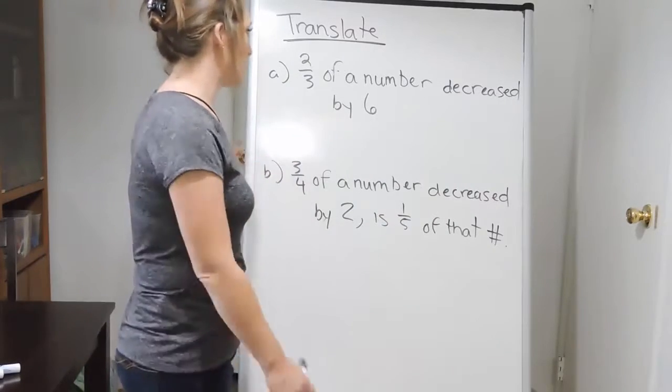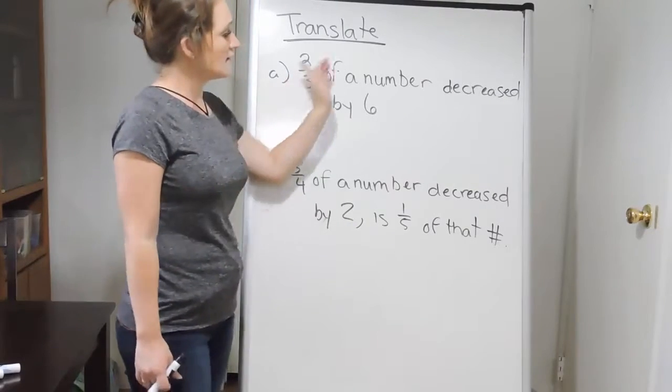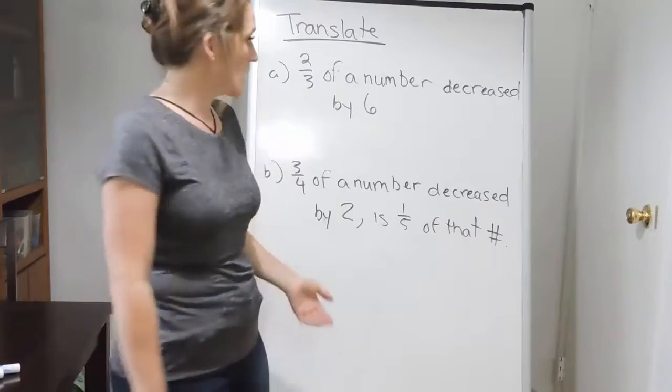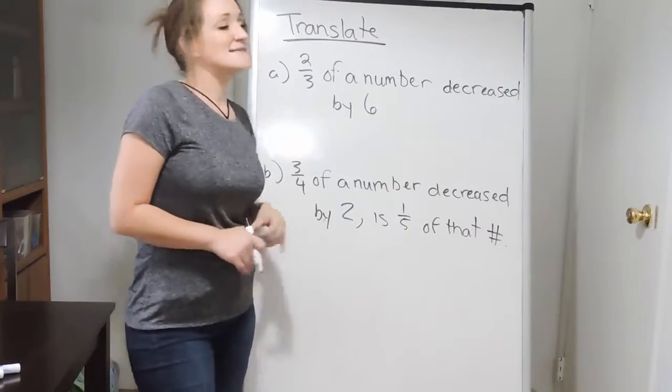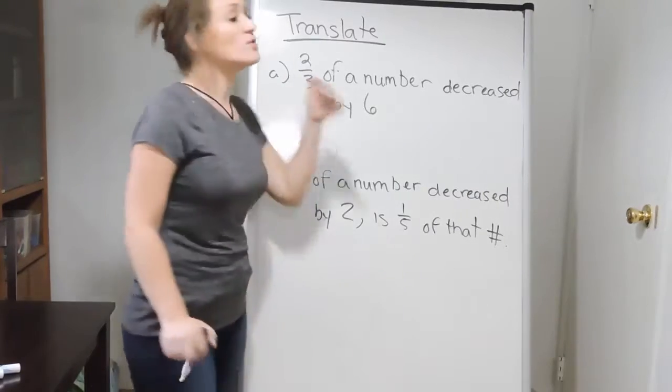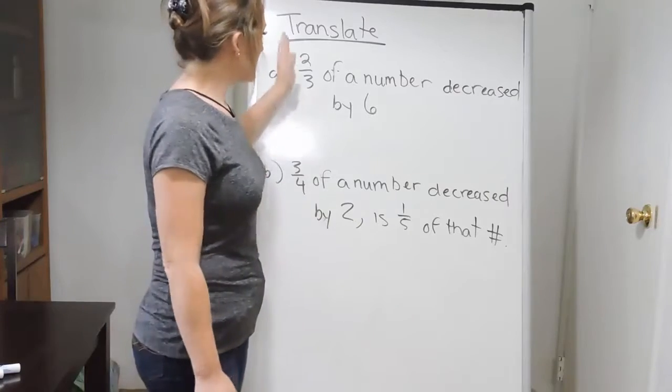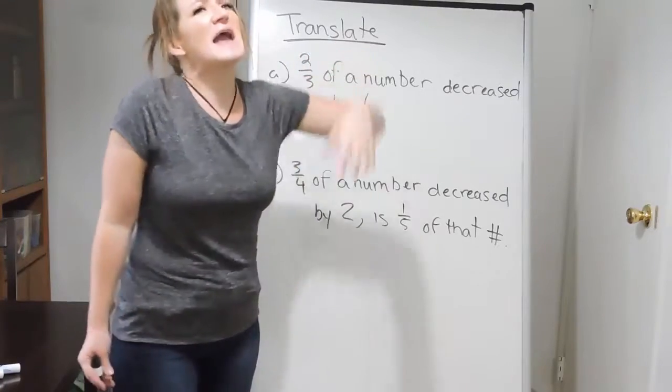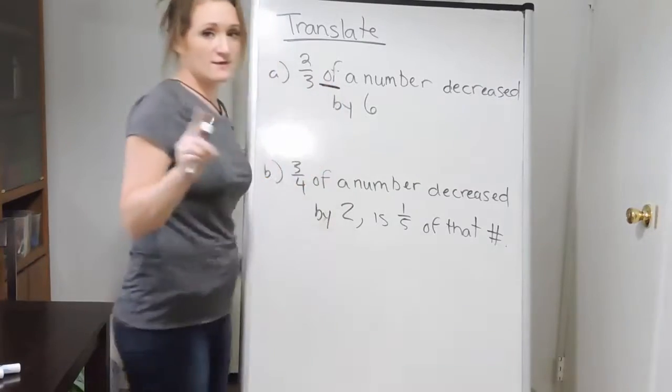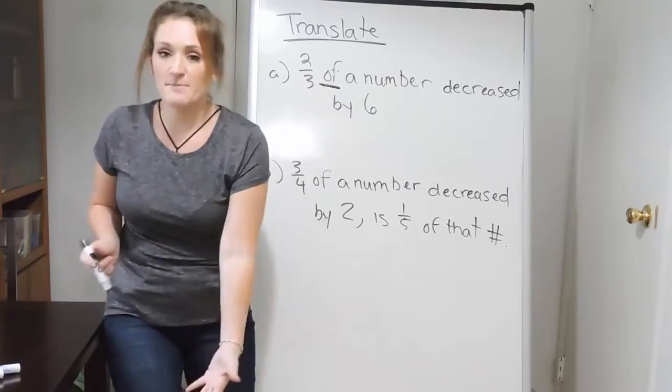So for these examples, we're just going to translate only, we're not going to get into solving quite yet. So taking a look at example A here, it says two-thirds of a number decreased by six. Okay, so when it comes to these examples, I say take them one word at a time. Two-thirds, so here I have two-thirds of something, and it says two-thirds of a number. Now, first off, the word of, typically the word of, when it comes to math, is asking you to multiply.